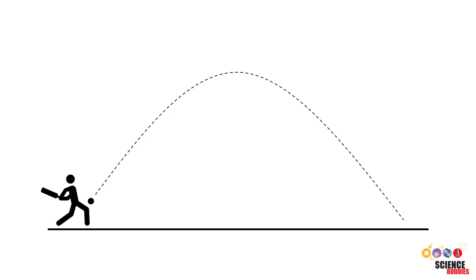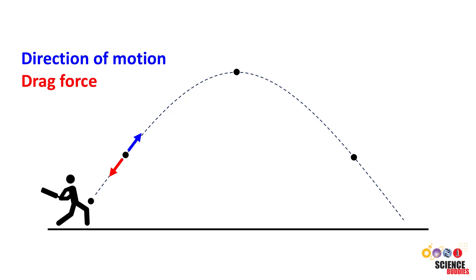You can also apply what you've learned to situations where the direction of motion changes, like when you throw or hit a ball. At each point along its trajectory, the ball is moving in a different direction. When the ball is first moving up and to the right, the drag force points down and to the left. When the ball is coming back down and moving to the right, the drag force points up and to the left. The drag force is only horizontal when the ball is at the peak of its trajectory where it temporarily has no vertical velocity.